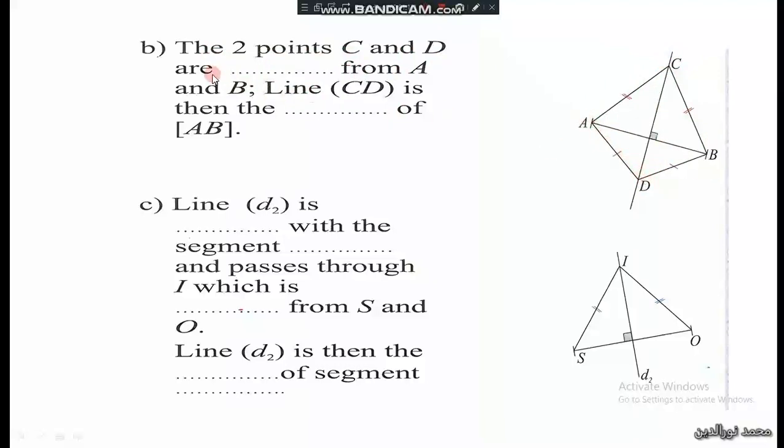So they are equidistant from A and B. Line CD is then the perpendicular bisector of the segment AB.